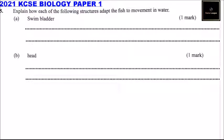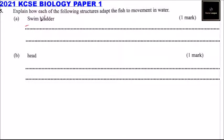Question number five: explain how each of the following structures adapts fish to movement in water. We have the swim bladder. The swim bladder assists by providing the fish with buoyancy.